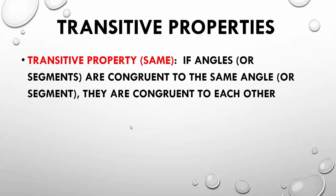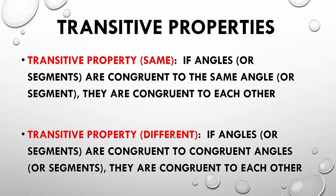Transitive Properties. The transitive property, now there's two different types. There's Same and you'll see the other one in a second. Transitive Property Same says if angles or segments are congruent to the same angle or segment, then they are congruent to each other. And you'll see an example of that in a second. Transitive Property Different states if angles or segments are congruent to congruent angles or segments, then they are congruent to each other. And while that may seem pretty confusing, it'll make sense here very quickly.